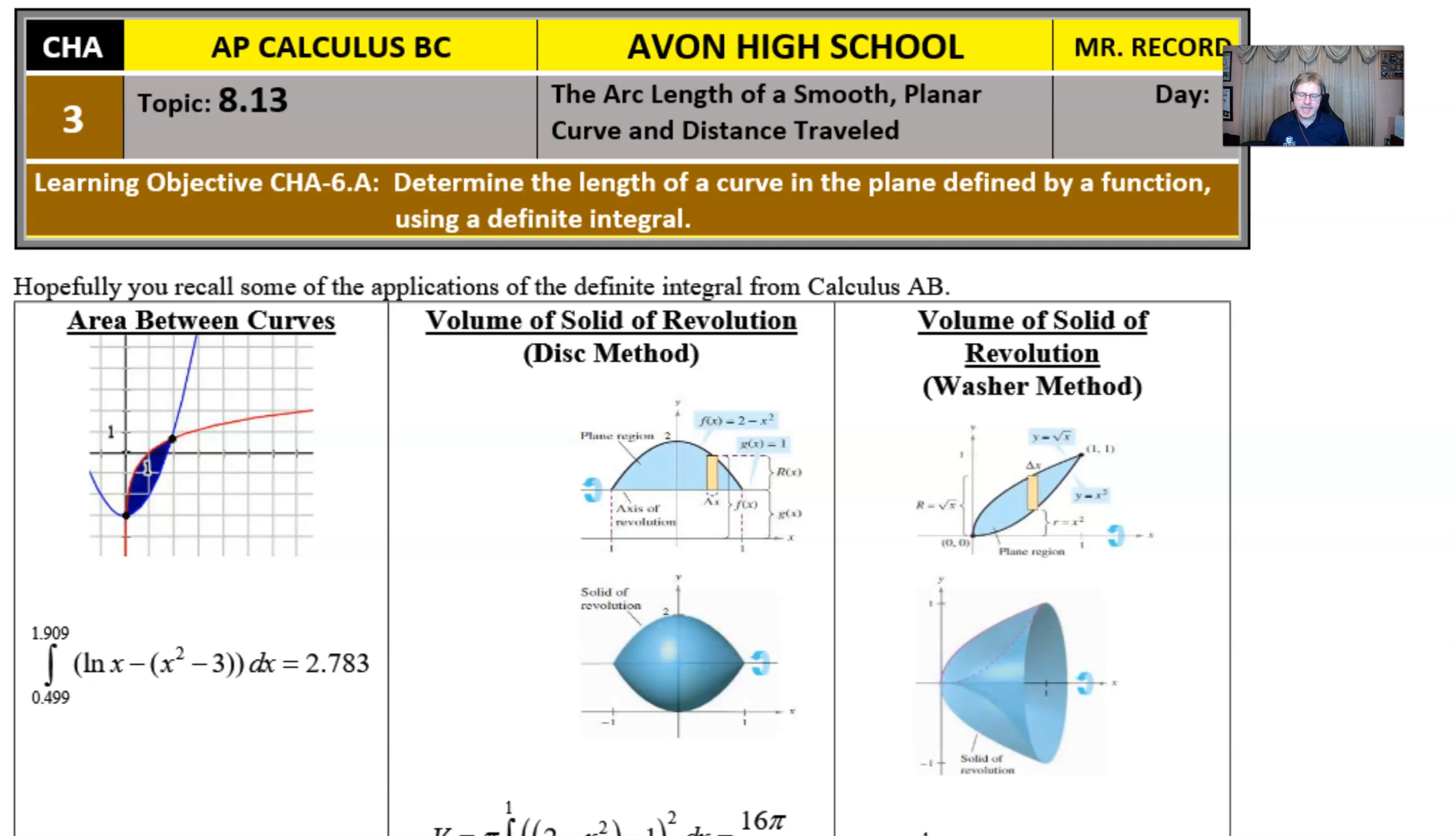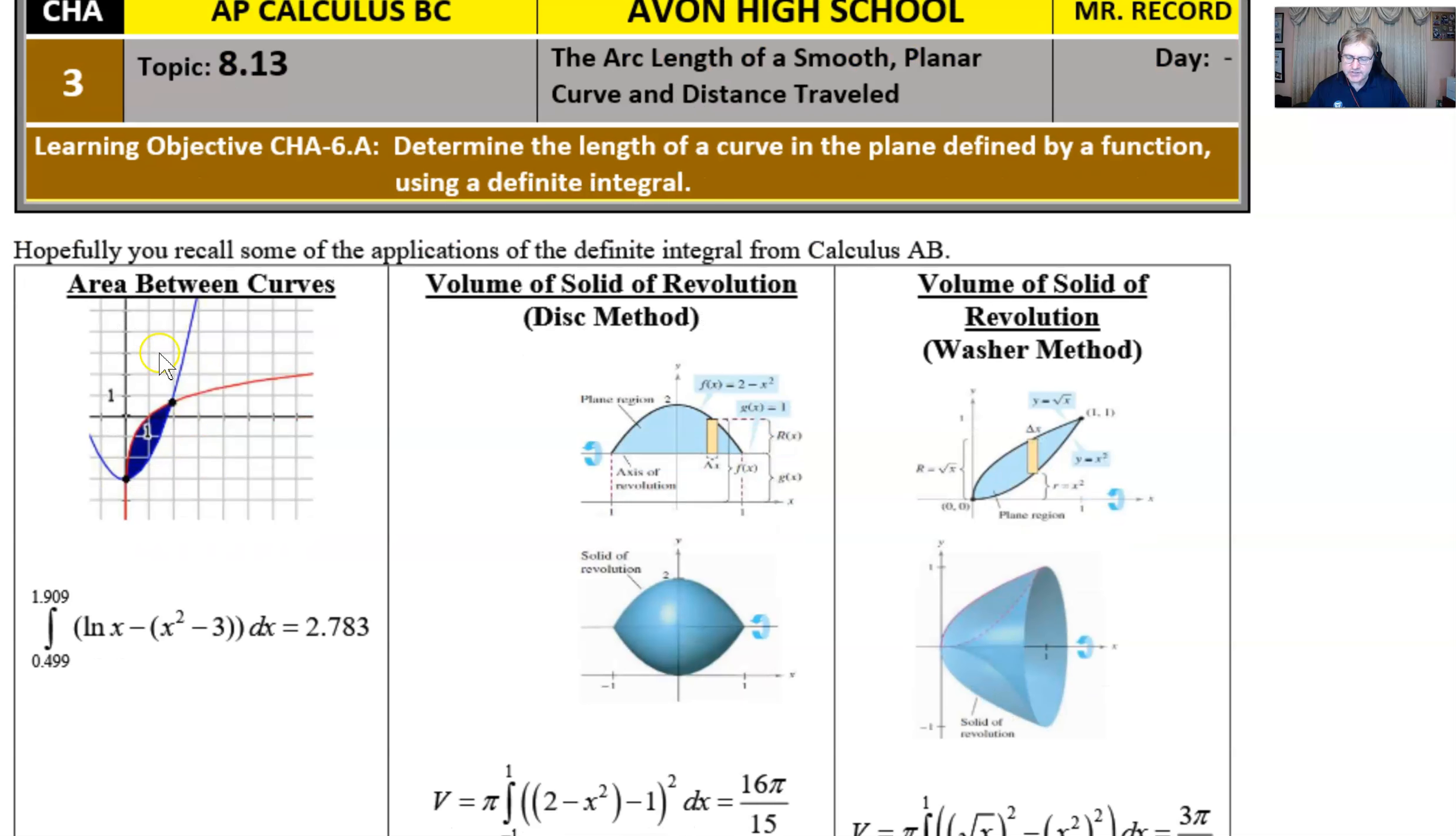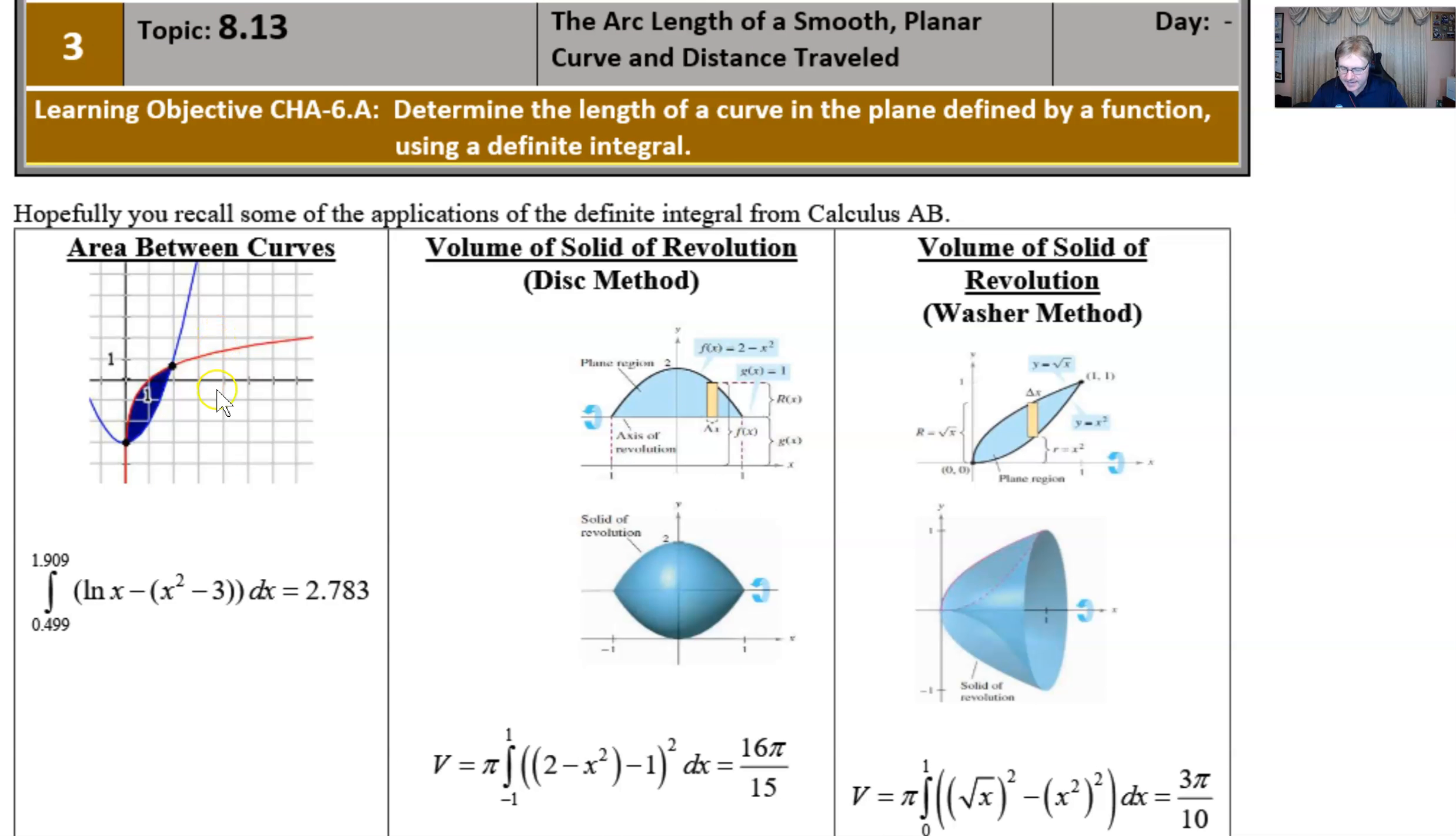Let's take a look at the beginning stages of this. These are my notes that I give to my students at Avon High School. To introduce 8.13, I like to talk about some applications of the definite integral that occur in calculus AB. The first is the area between curves. You might remember how we could find the area between a pair of curves, this red curve and this blue curve, by subtracting the top minus the bottom curve and integrating along the boundary where they intersect.